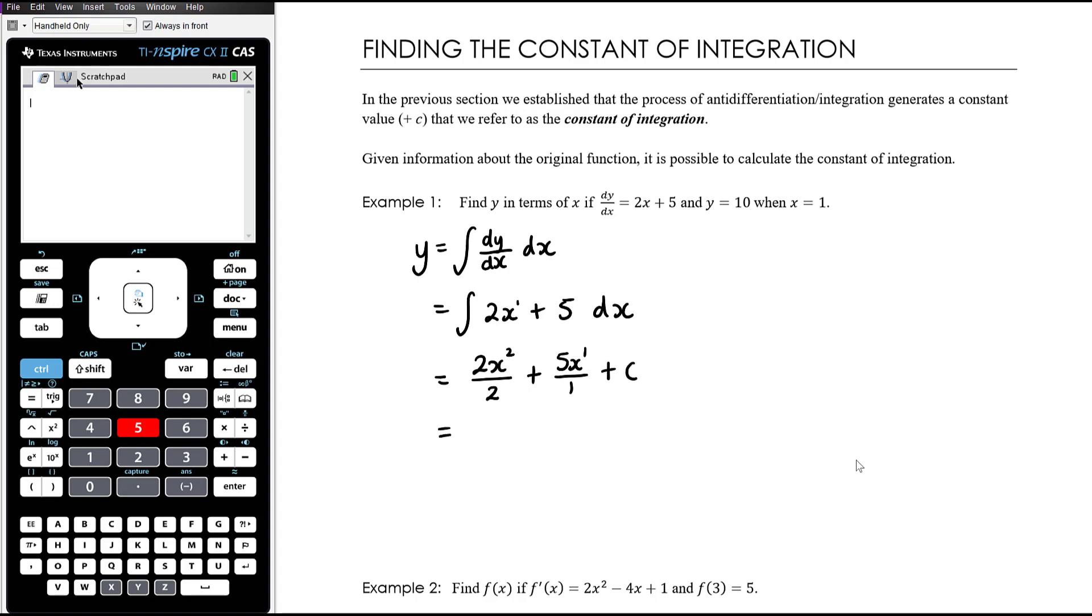Alright, so let's just tidy this up. So this is x squared plus 5x plus c. But now we've got some additional information that we can make use of to be able to find c. So we know when x is equal to 1, y is equal to 10. So we know that 10 is going to be equal to 1 squared plus 5 times 1 plus c.